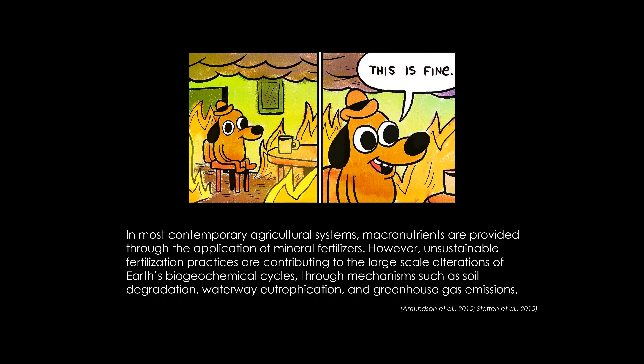Nitrogen is expensive right now, mostly because of world events — but 78% of our atmosphere is nitrogen, so theoretically we have a large supply. Phosphorus on the other hand — about 85% is in Morocco, and only five countries in the world hold 95%+ of all phosphorus mines. That's scary. We can't continue using phosphorus that way; it will run out.